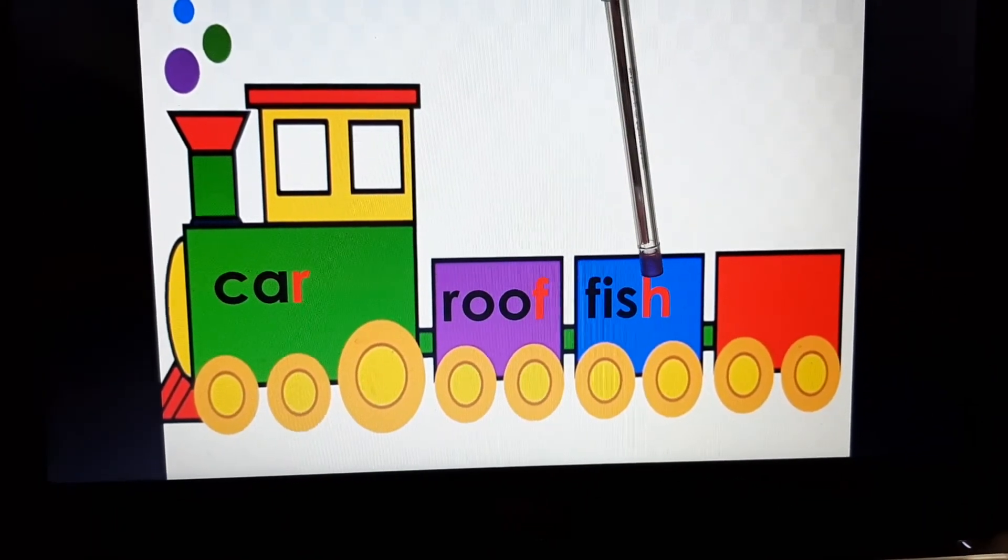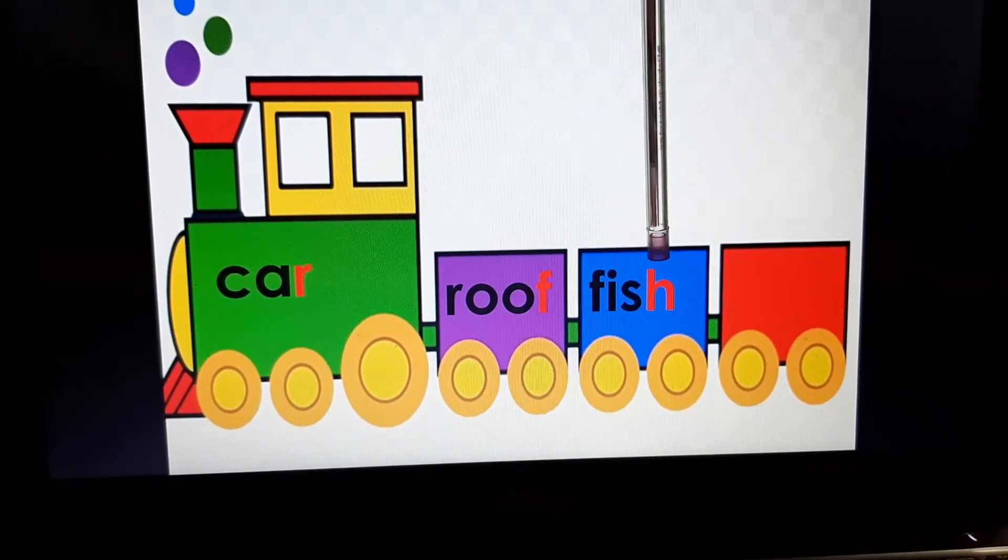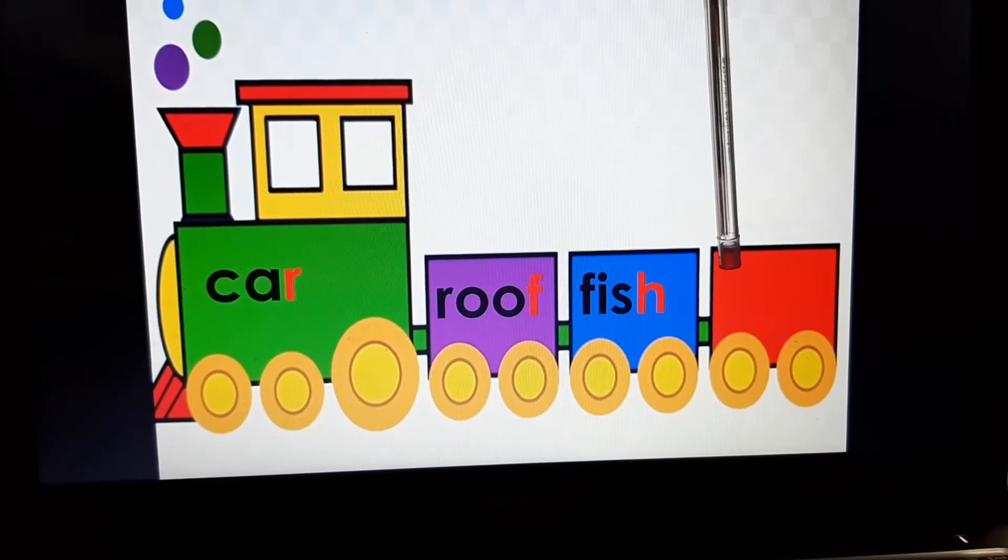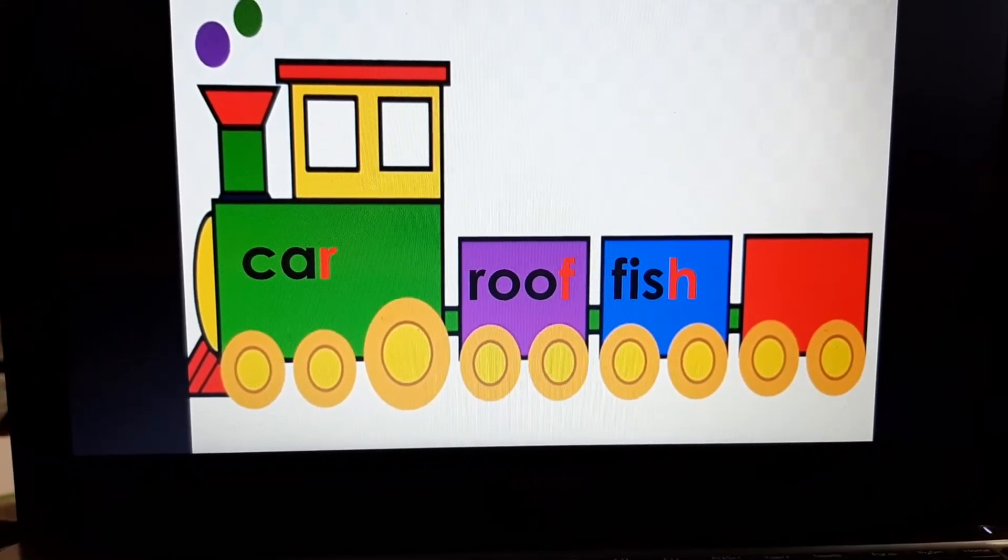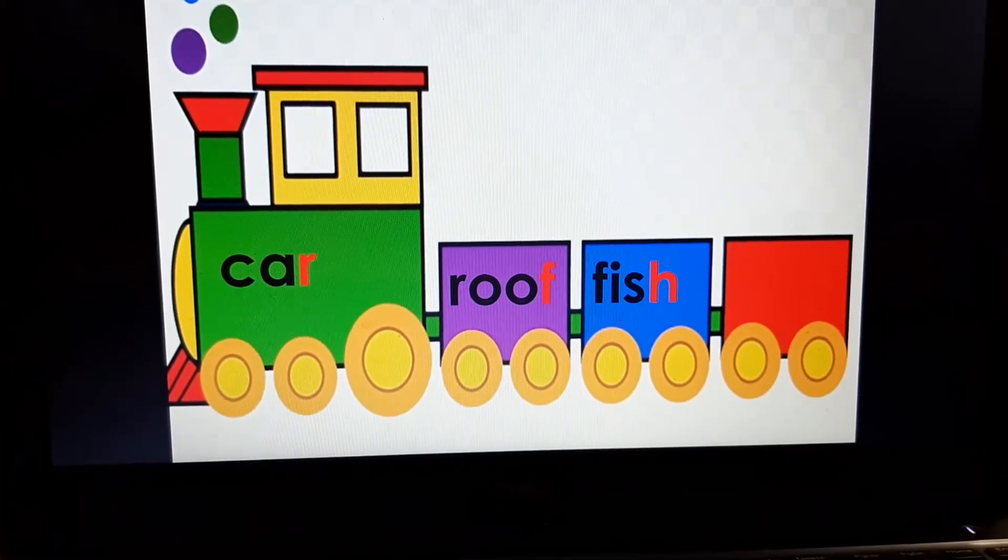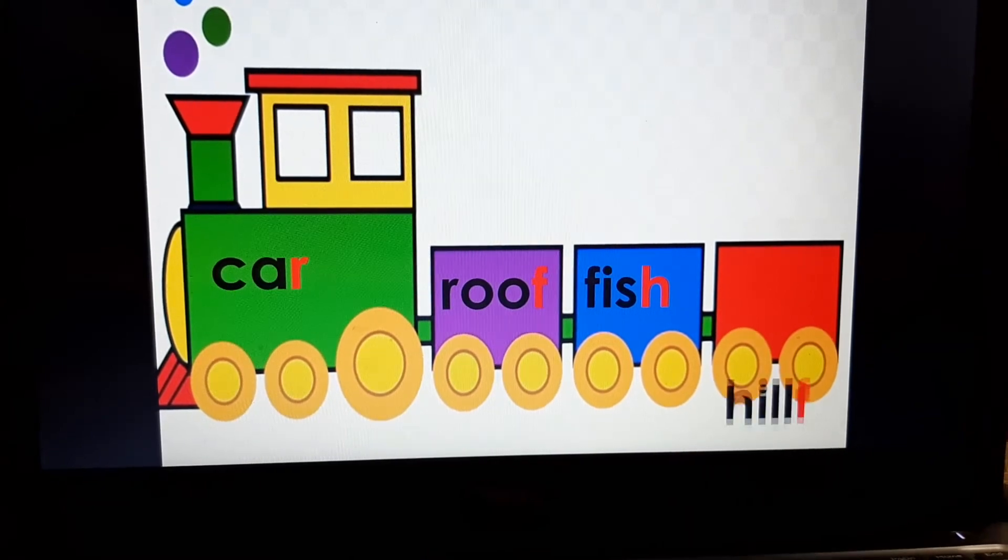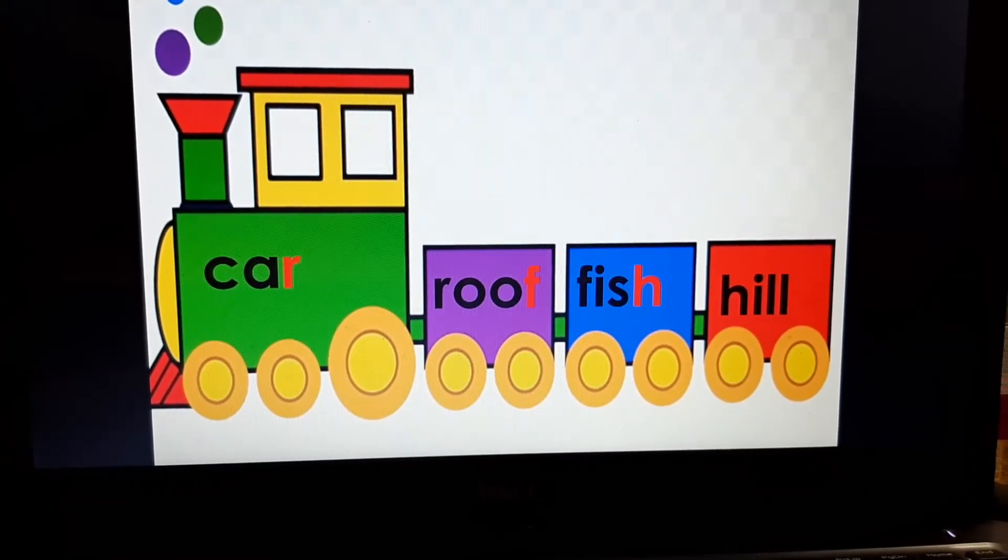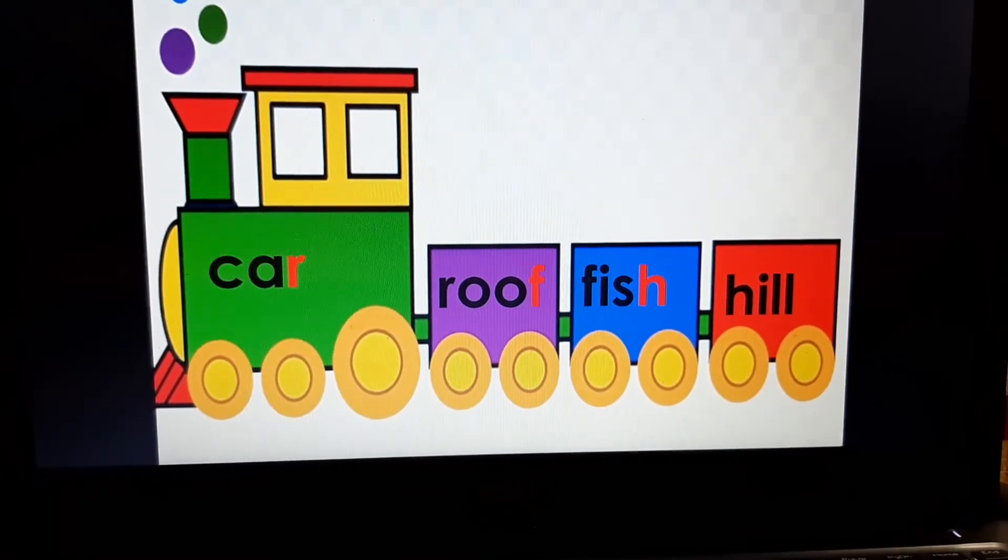Now look at the last letter. Last letter is H. And last letter will become the first letter for the next word. So think about some words which begin with H. Like hot, hen. And I have written hill.